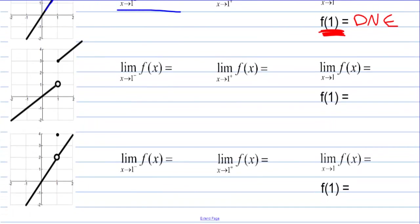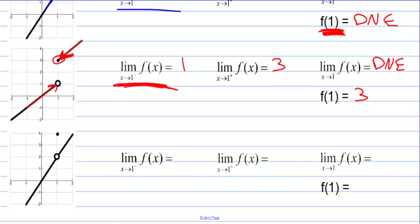Looking at this piecewise function: the limit as x approaches 1 from the left is 1. As the function approaches 1 from the right, the y value is approaching 3 — a different value. So the limit at x = 1 doesn't exist. There is a function value though; it's up at 3. In the last example, the limit as x approaches 1 from the left is 2, and from the right is also 2, so the limit is 2. But the function value is sitting at 4, so f(1) = 4.